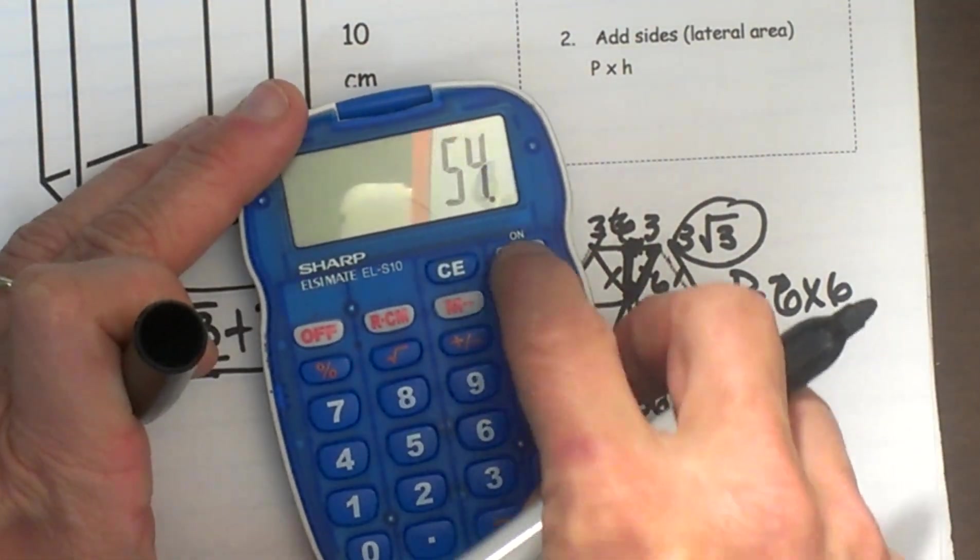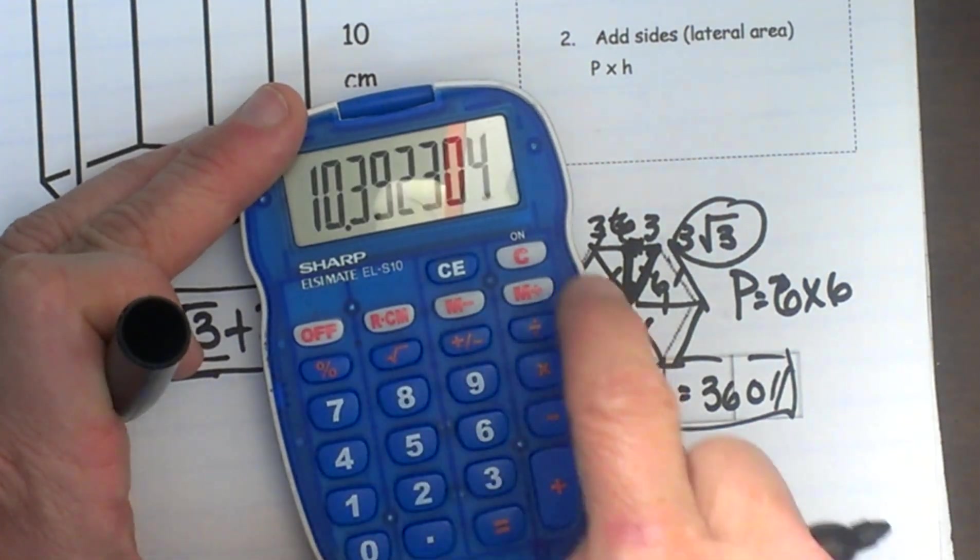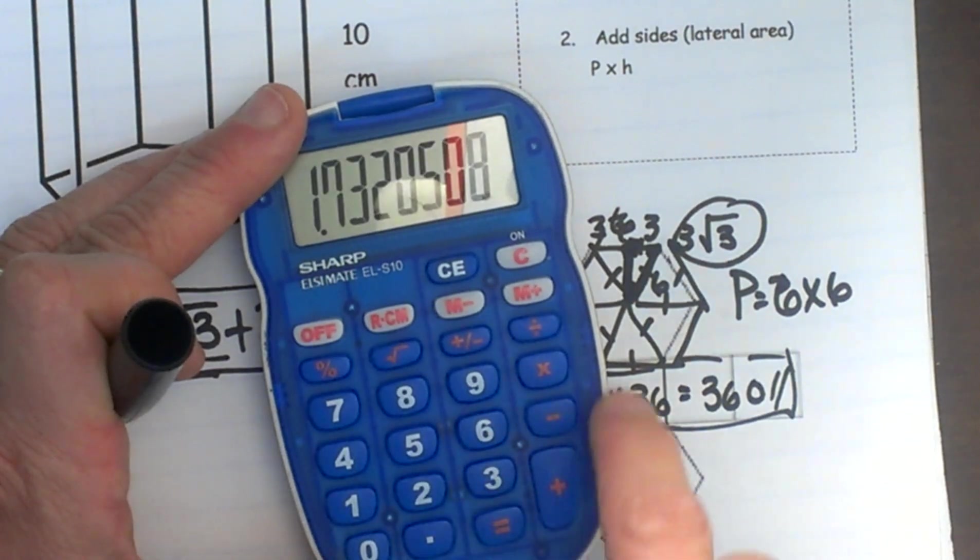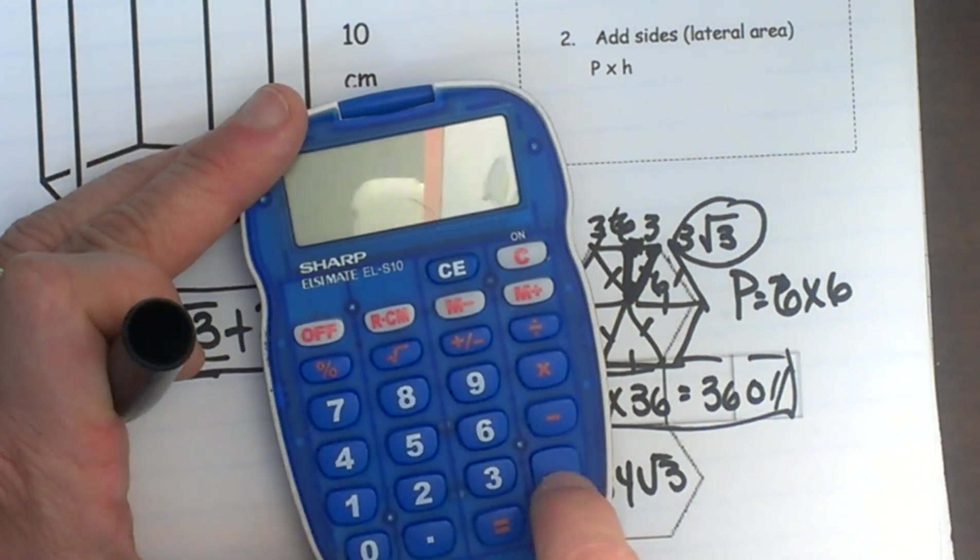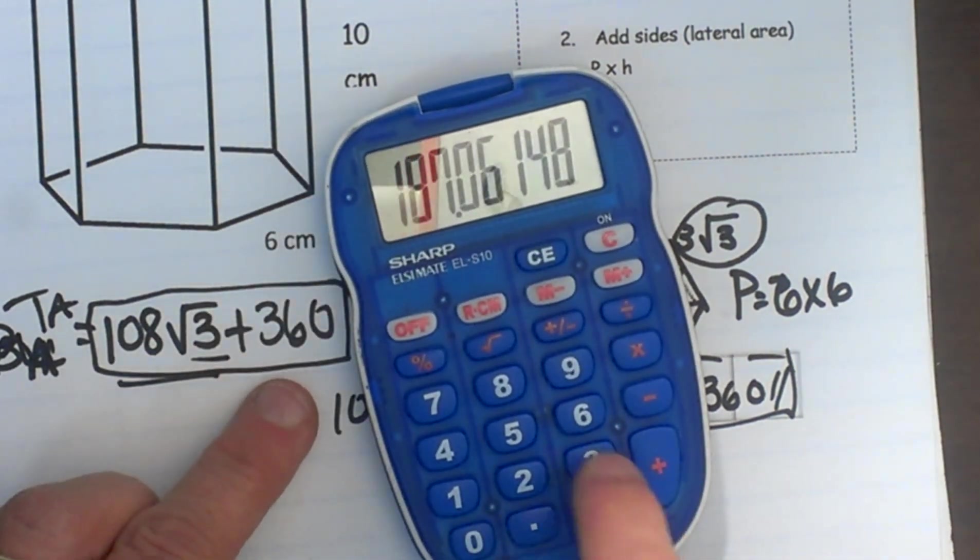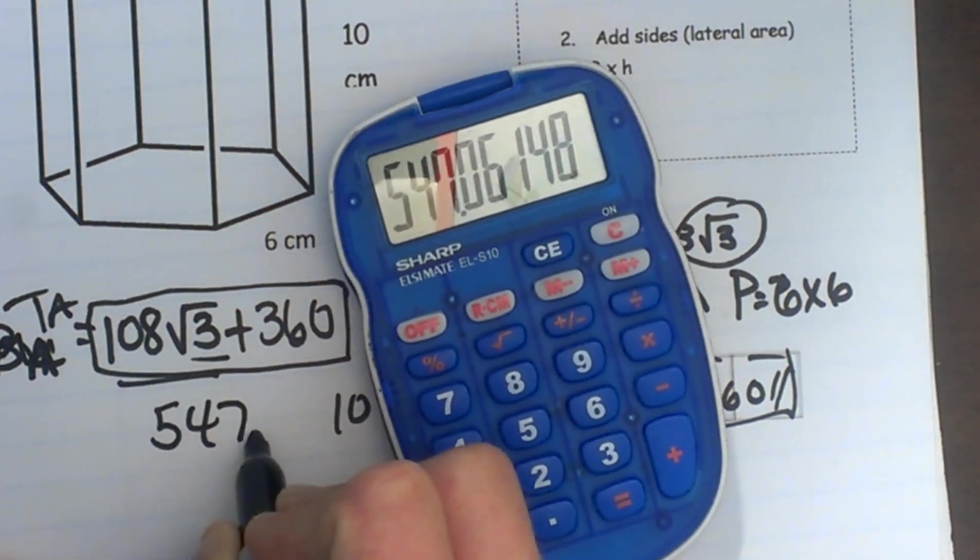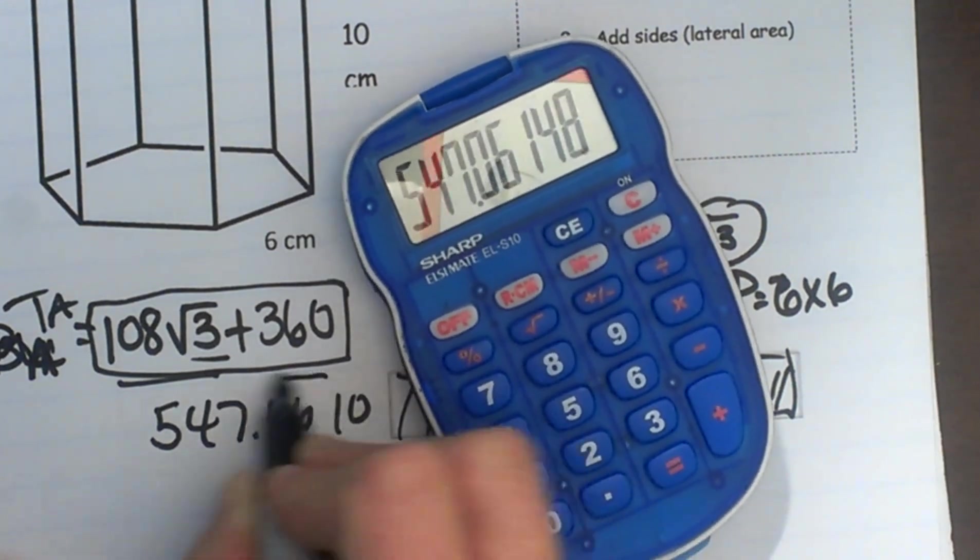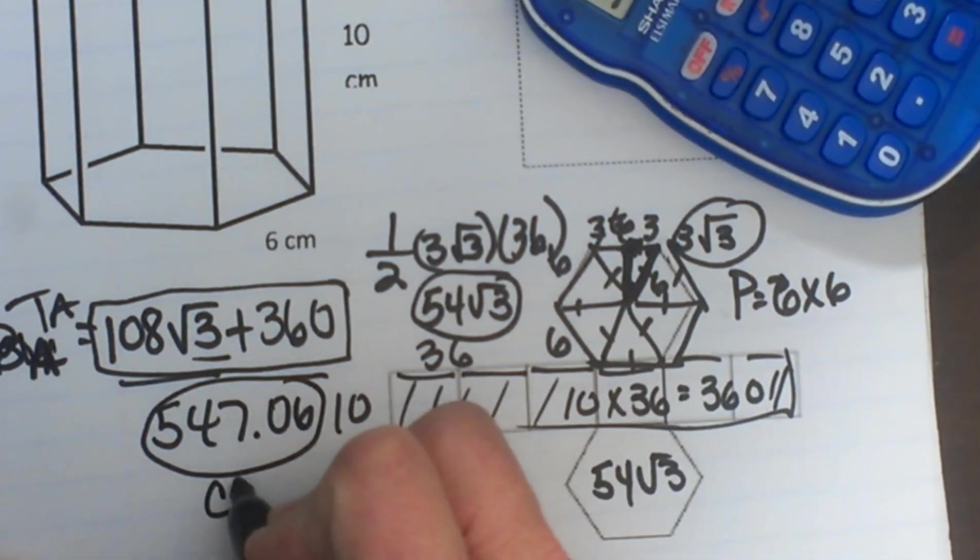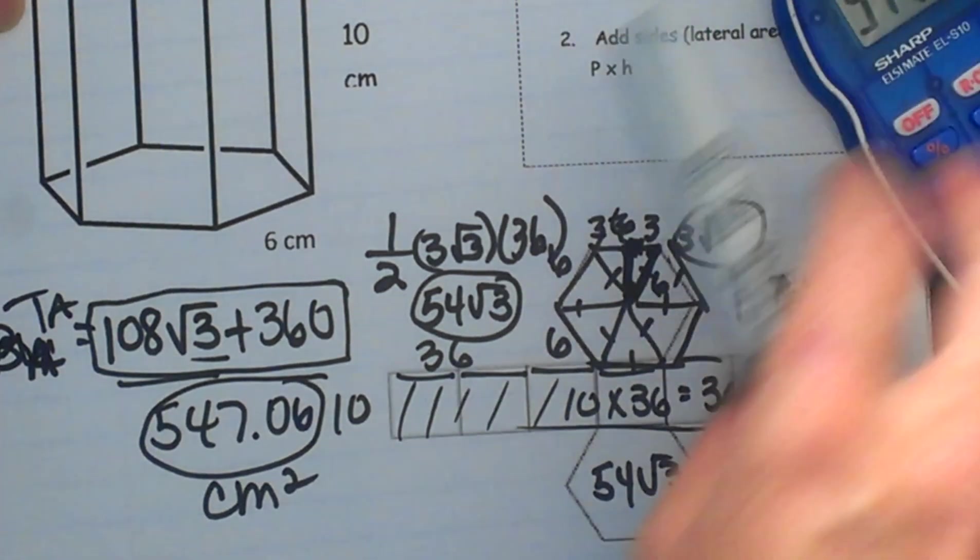So let's convert that to a decimal. I take 108 times square root of 3. That gives me 187. So 108 square root of 3 is 187. And then I am going to add to it 360. So the decimal answer would be 547.06 and since this is area I would say centimeters squared and that is how you find the surface area of a hexagonal prism. Hope this video was helpful.